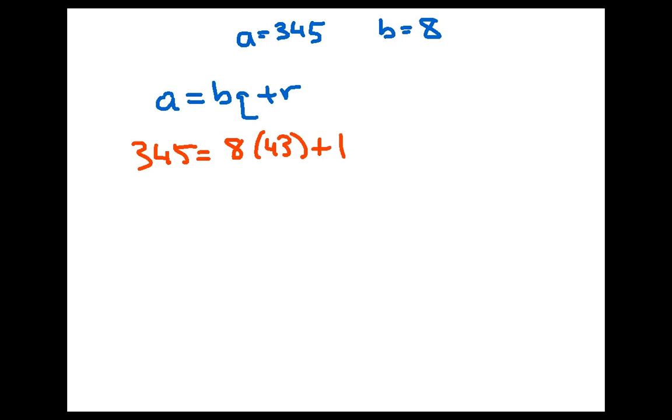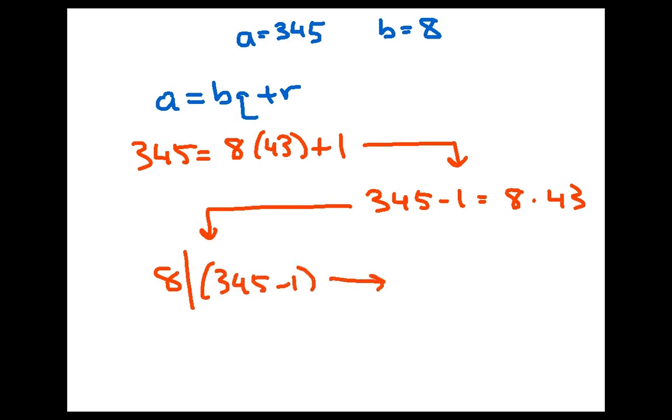Let's do something different with this equation here. Let's subtract 1 from both sides and get 345 minus 1 equals 8 times 43. This is certainly true, but it's saying something interesting. It's saying that 345 minus 1 is divisible by 8, it's a multiple of 8. So we've seen this language before where 8 divides a difference, and what this is really saying here is that 345 is congruent to 1 modulo 8, because 8 divides their difference.